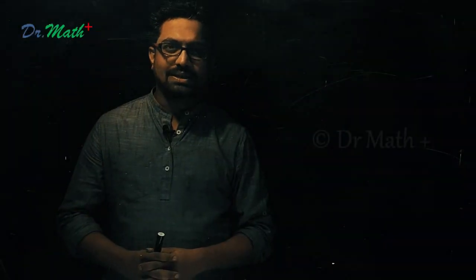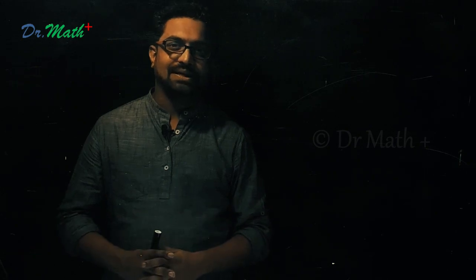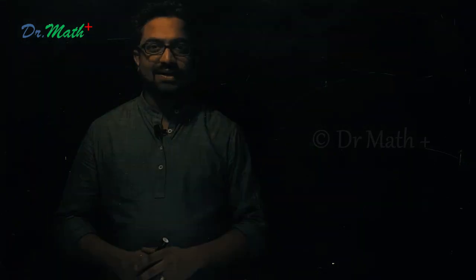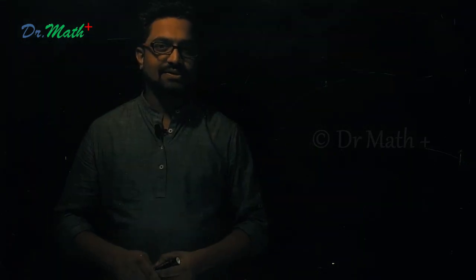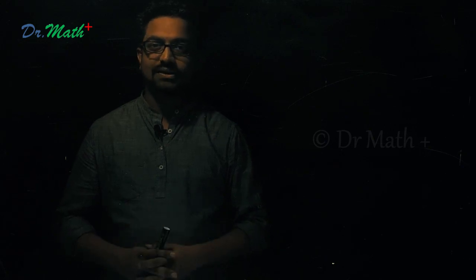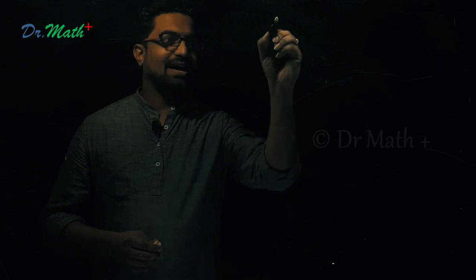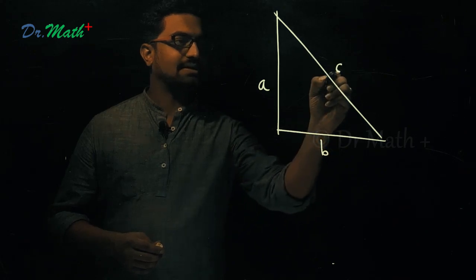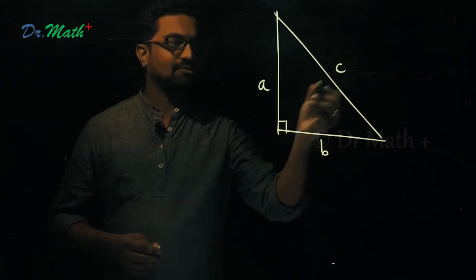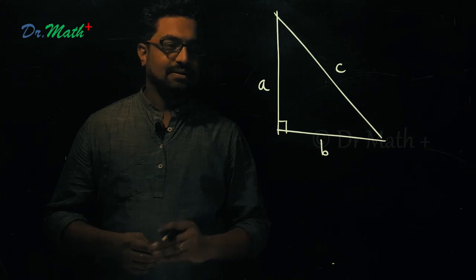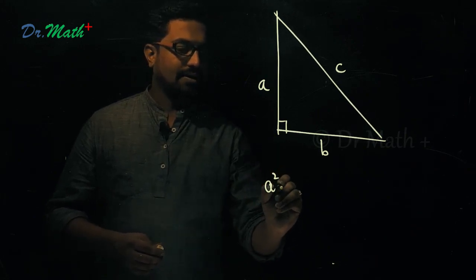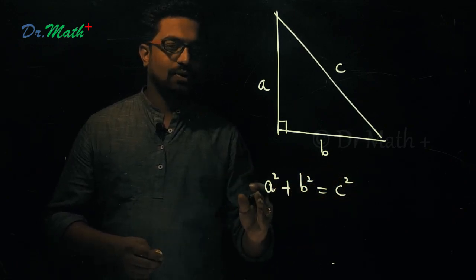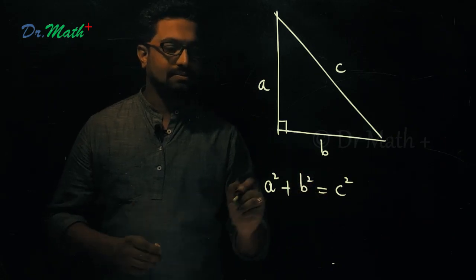Pythagoras theorem is probably the most popular theorem in mathematics at high school level. All of us have studied it — it says in a right-angled triangle, the square on the hypotenuse equals the sum of squares on the other two sides. If I have a right-angled triangle with sides A, B, and hypotenuse C, then A square plus B square equals C square. This is Pythagoras theorem.